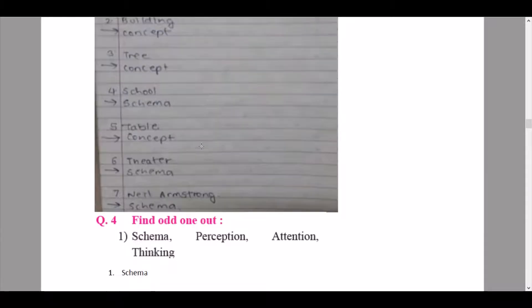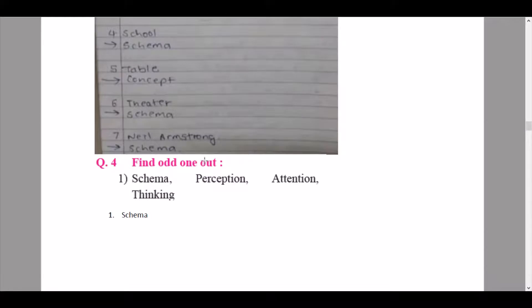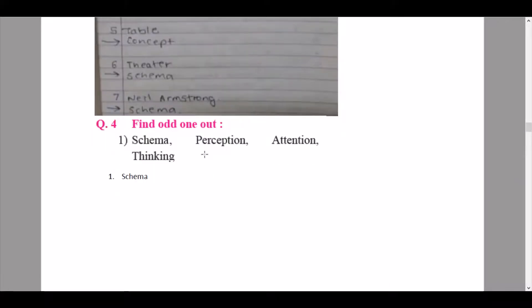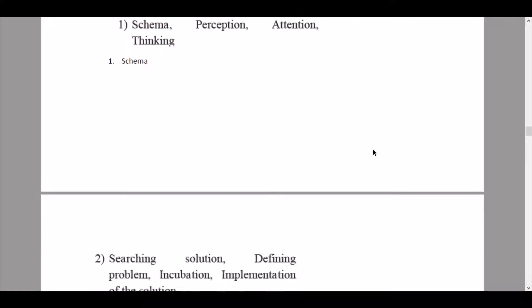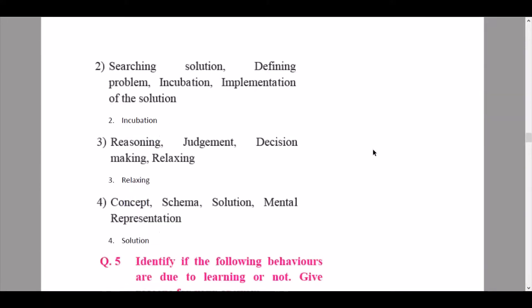If you want to support the channel or you want exclusive notes of IT and psychology, you can follow me on Patreon by the link given in the description. So let's continue. Question number four: find odd one out. The first one given to us is schema, perception, attention and thinking. So out of this, schema is the odd one out because perception, attention and thinking are totally different.